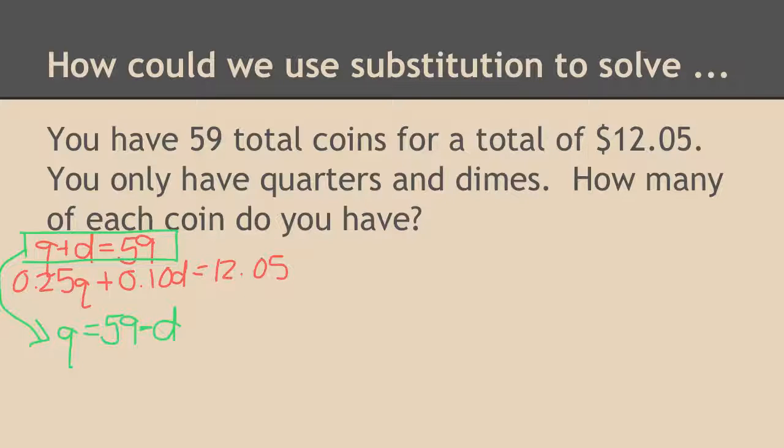So once I have altered that, I now know that I can put the Q in right there. So I'm just going to rewrite 25 cents times Q but remember instead of that I'm going to substitute what it equals plus 10 cents for every dime equals 12.05.